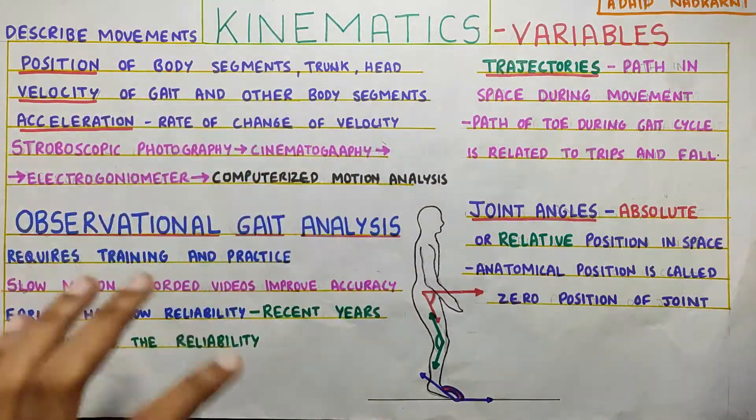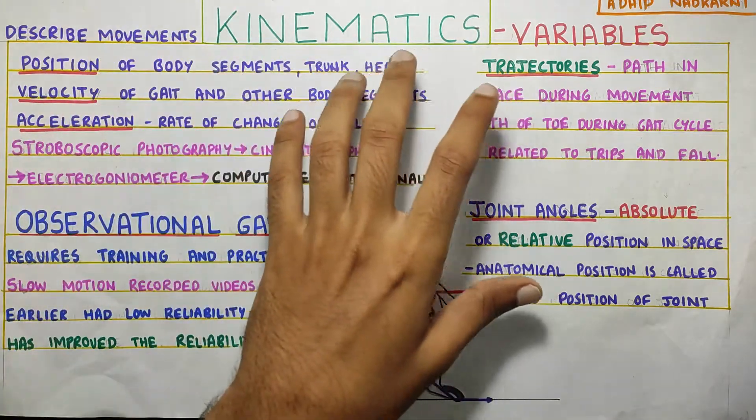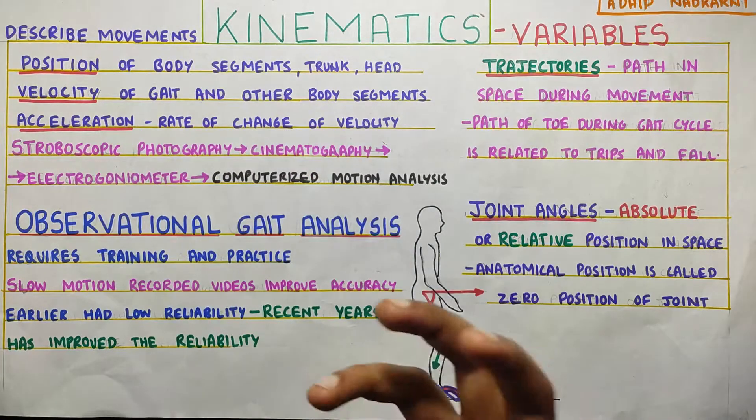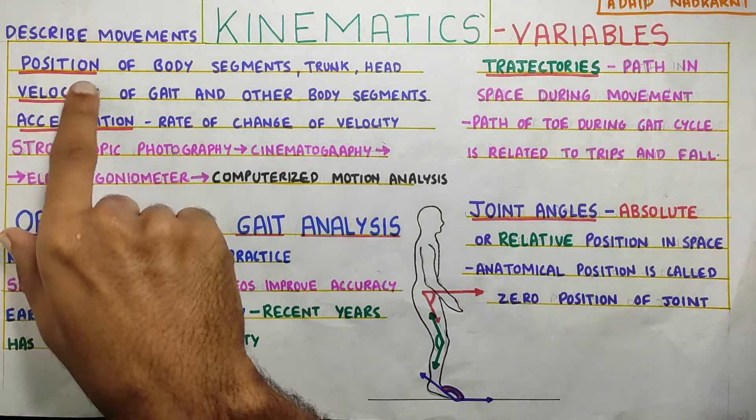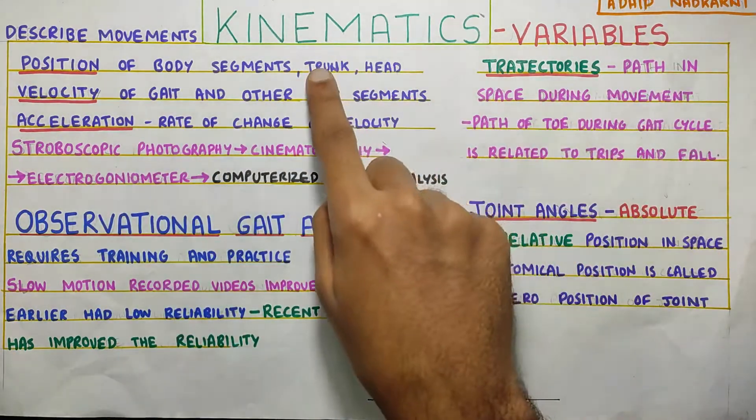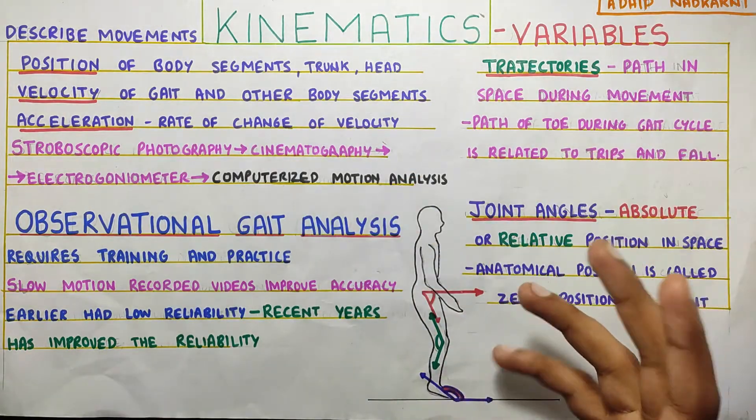So now that we have covered what are the ways we analyze the gait, now let's look at the kinematics variables. Now kinematics, as I've discussed before, is the movement. We describe the movement. So what will come under that? The position. When I say position, it is the position of the body, body segments, your trunk, head. All these things will be considered when you are looking at a gait.